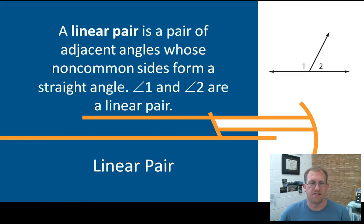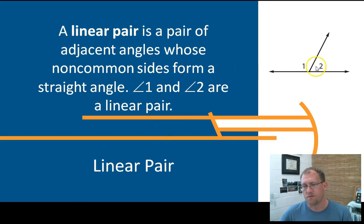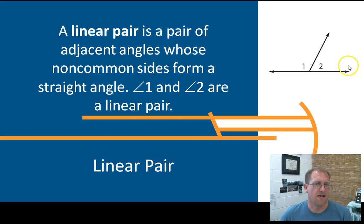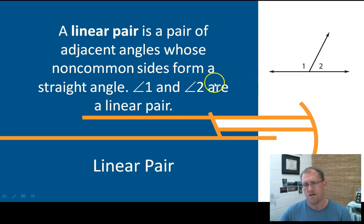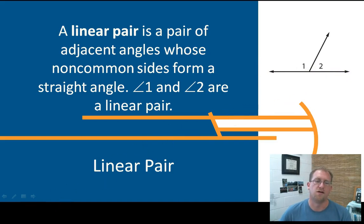A linear pair is a pair of adjacent angles whose non-common sides form a straight angle. In other words, I have angle one and angle two — they share this ray, but the other sides of the angles form a straight line. In other words, it's two angles the sum of which is 180 degrees. That's probably the clearest way to say it: two angles whose sum is 180 degrees. You have a straight line when you stick those two angles together. That's a linear pair.